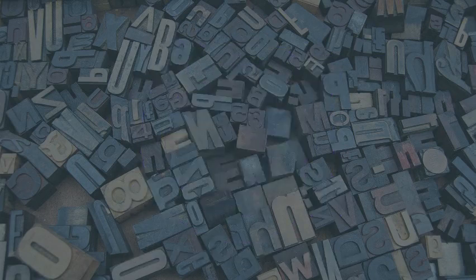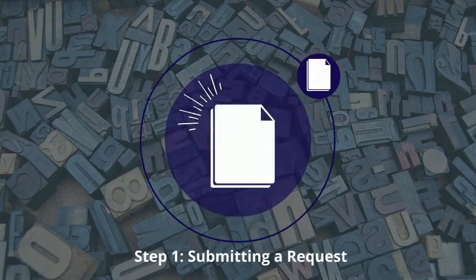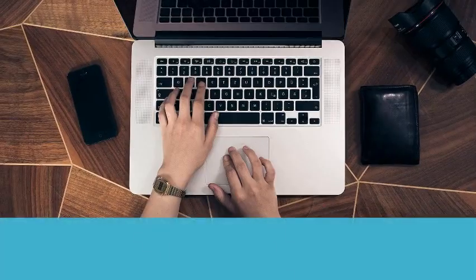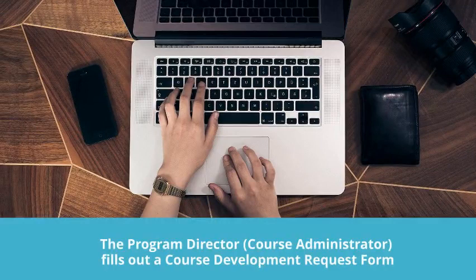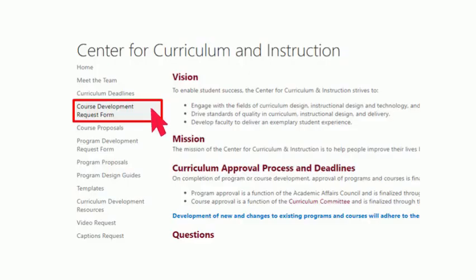The first step is submitting a request. In order to submit a request, a program director or course administrator must fill out a course development request form. This can be done from the CCI SharePoint by accessing the PowerApps request form. By filling out a new request form and alerting an instructional designer that a request has been made, the process has been initiated.